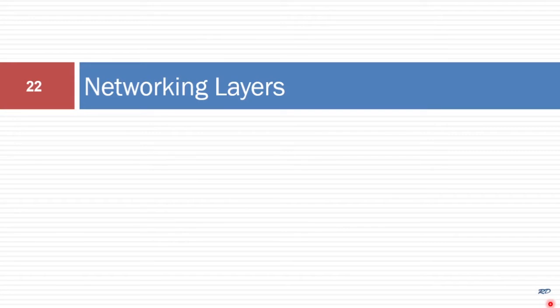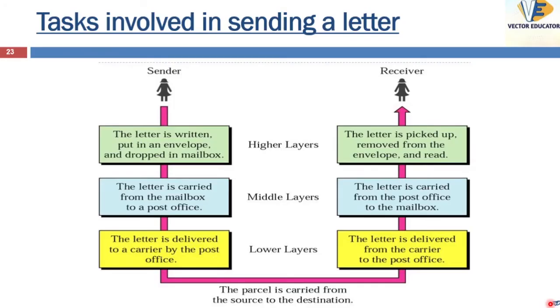The main objective of computer networks is to transfer data from the sender to the receiver. This task can be divided into subtasks, and each is done by different layers. We will study about these networking layers today. But before we understand these layers, let us first understand the task involved in a traditional communication.